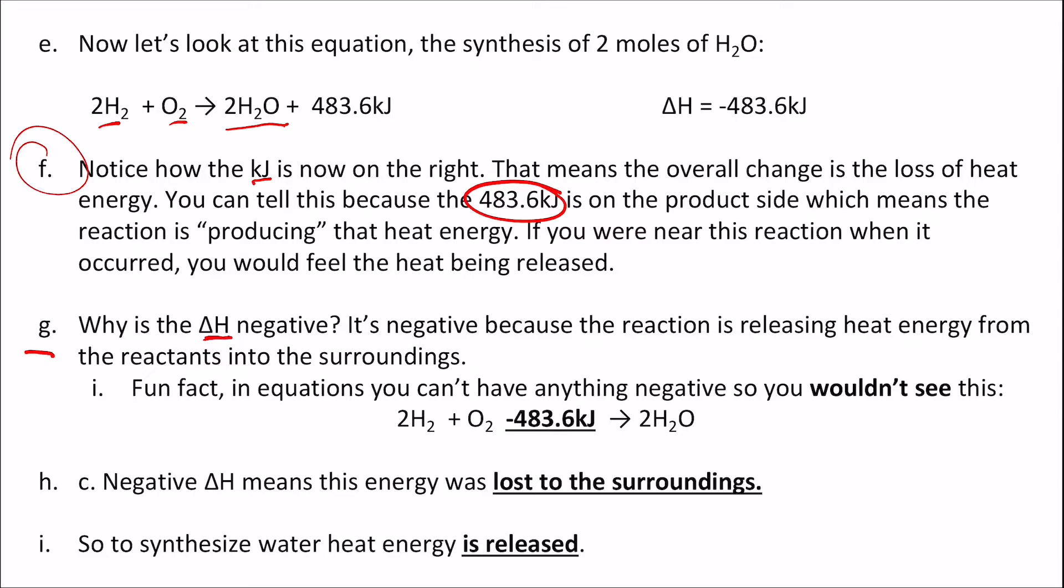Why is the delta H negative? It's negative because the reaction is releasing heat energy from the reactants into the surroundings. It's losing energy. Here's a fun fact. In equations, you can't have anything negative. So you would not see something like this. See how it has a negative over here, and it's on the reactant side? We can't do that. So instead, we move this to the product side. So on the product side, it is positive. A negative delta H means this energy was lost to the surroundings. So to synthesize water, heat energy is released.